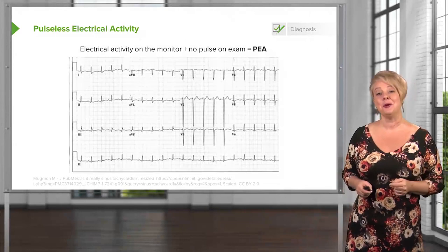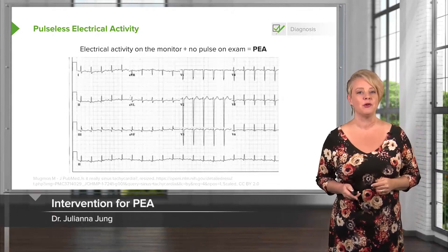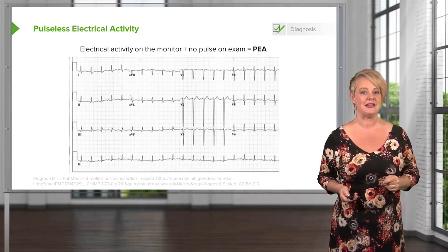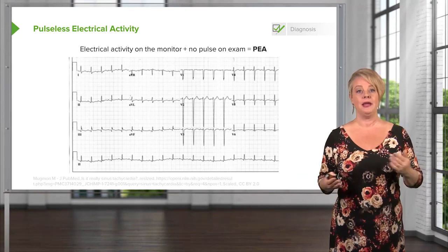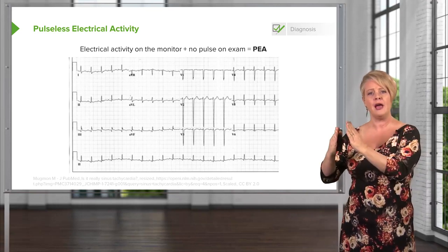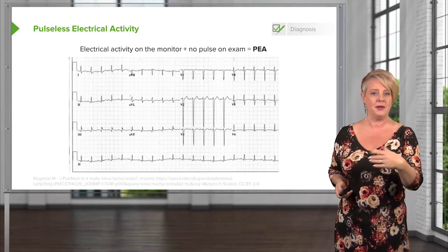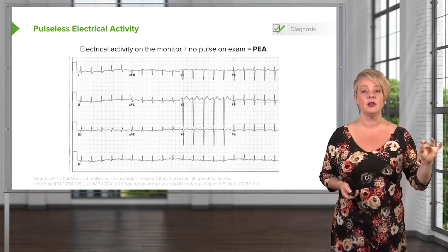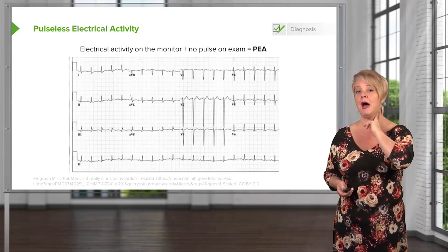We're going to switch gears and talk about pulseless electrical activity. This is one of my favorite rhythms to think about because it's physiologically much more complex and interesting than V-fib and V-tach, and there's a broad differential you're going to learn about. PEA stands for pulseless electrical activity, meaning there is organized electrical conduction on the monitor — normal-looking QRS complexes with P waves and T waves — however, there is clinically no pulse.